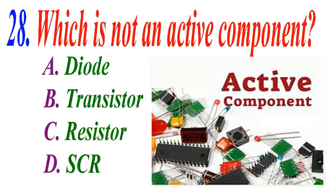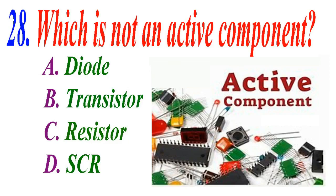Which is not an active component? A diode, B transistor, C resistor, D SCR. The correct answer is C resistor.